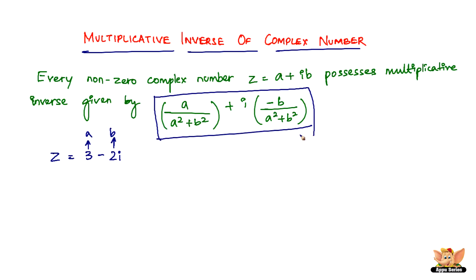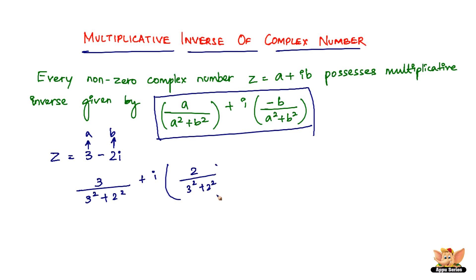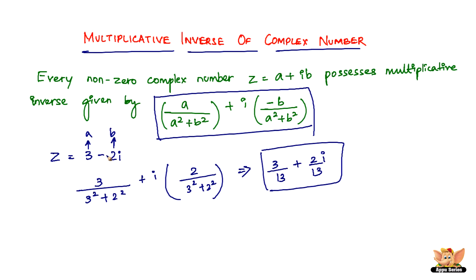The Multiplicative Inverse of z equals 3 minus 2i is given by: 3 divided by (3 squared plus 2 squared), plus i times minus b — since b is already minus 2, we write minus of minus 2, which is plus 2, divided by (3 squared plus 2 squared). Solving: 3 squared is 9, 2 squared is 4, and 9 plus 4 is 13. So we get 3 divided by 13, plus 2 divided by 13 times i.